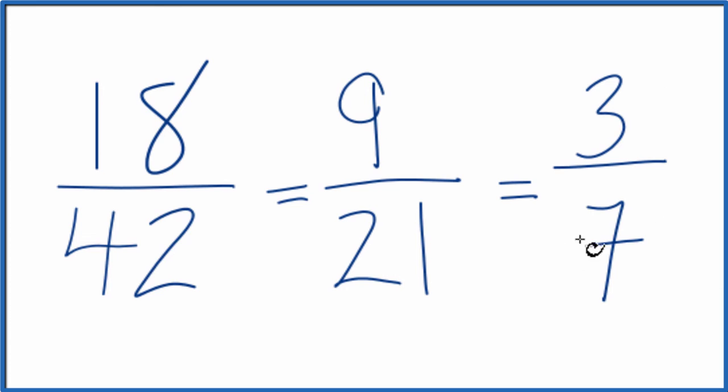We've simplified 18/42 down to 3/7. These are equivalent fractions. 3 divided by 7, 18 divided by 42, or 9 divided by 21, you'll get the same answer. We've just reduced or simplified 18/42 down to 3/7. This is Dr. B, thanks for watching.